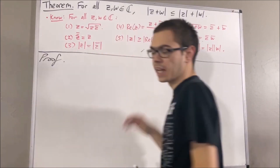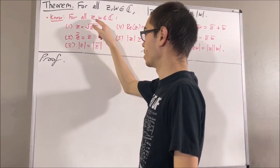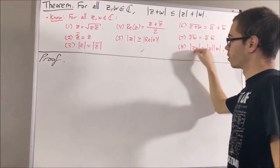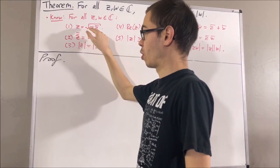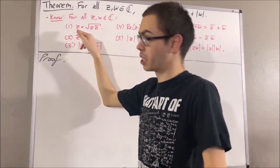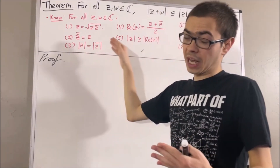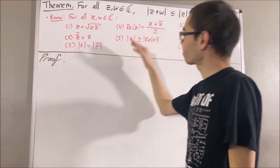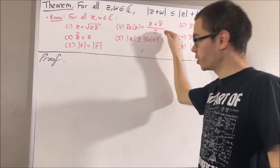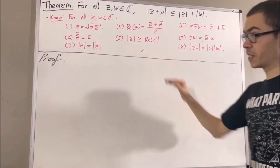We're going to be using eight preliminary results. Given any two complex numbers z and w, these eight facts are true. First, |z| equals the square root of z times the conjugate of z. Second, the conjugate of the conjugate of z equals z. Third, |z| equals the absolute value of the conjugate of z. Fourth, the real part of z equals z plus the conjugate of z, all over 2. Fifth, |z| is greater than or equal to the absolute value of the real part of z.